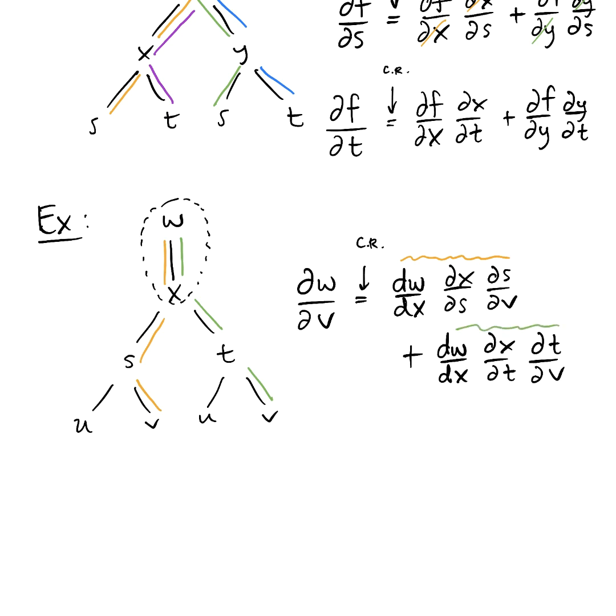So depending on the branch diagram, however many layers deep it is, you just keep your wits and find all the pathways from the variable you are interested in, v in this example, all the way back to the top variable, w in this example. However many pathways there are, that's how many chunks are going to be involved in your chain rule. Go draw some branch diagrams and make sure you've got the mechanics of chain rule dialed in. And then we'll talk a little bit more on Thursday and Friday about chain rule. See you next time.